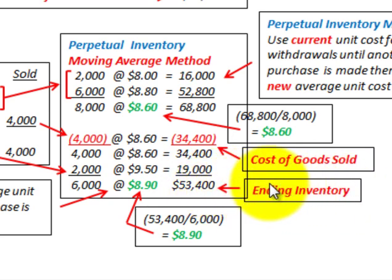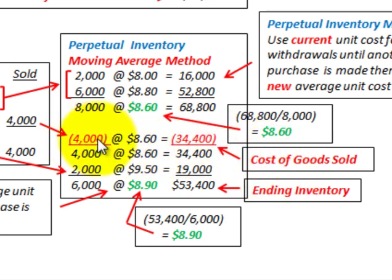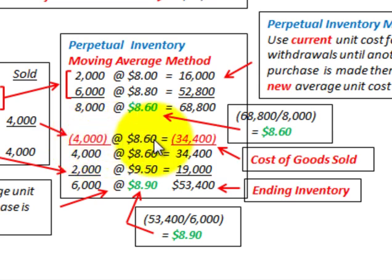We've calculated our ending inventory using the perpetual inventory method with the moving average. We only had one sale for the period — those 4,000 units — so our cost of goods sold is the 4,000 units at $8.60, which equals $34,400. That is our total cost of goods sold.